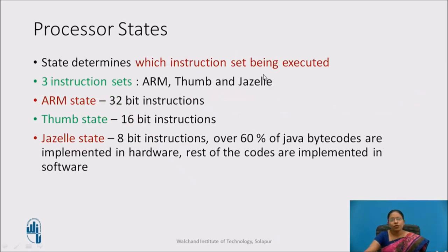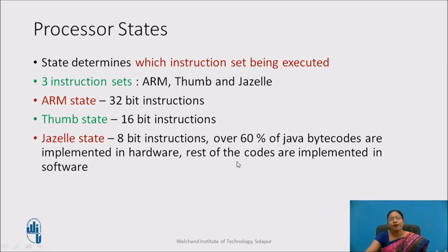State determines which instruction set is to be executed. There are three instruction sets: ARM, Thumb, and Jazelle. ARM state has 32-bit instructions, Thumb state has 16-bit instructions, and Jazelle state has 8-bit instructions. For the Jazelle state, over 60 percent of Java byte codes are implemented in hardware and the rest are implemented in software.